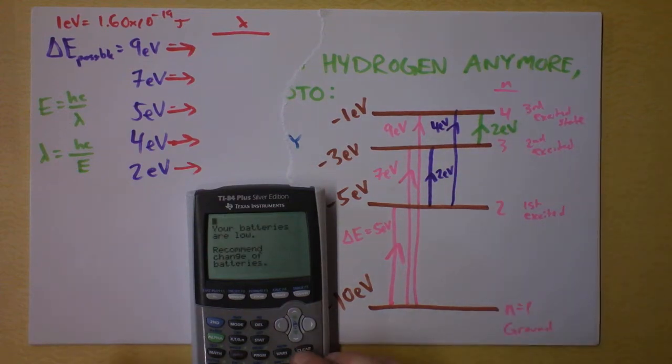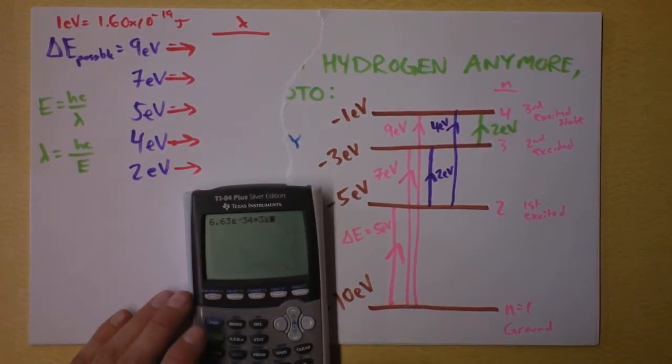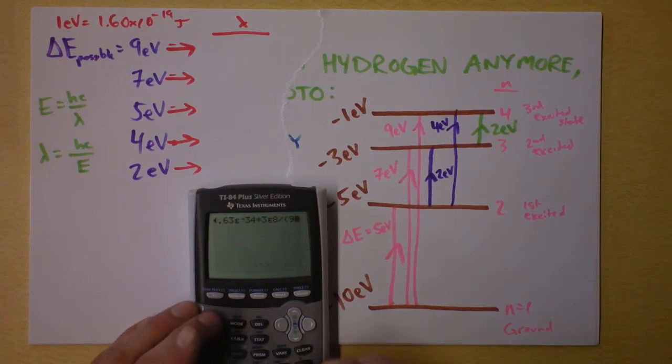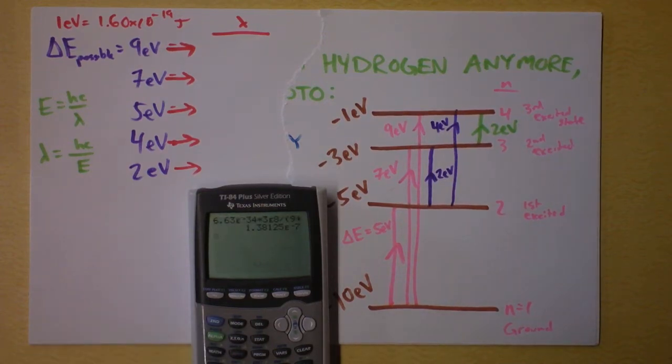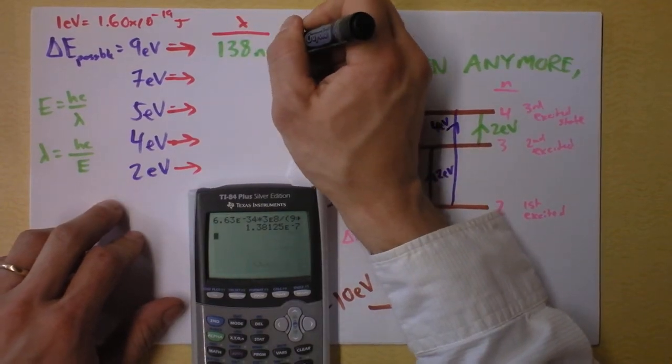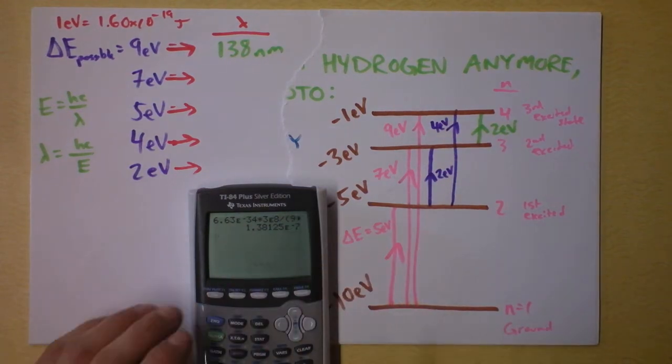I plug in h, 6.63 times 10 to the negative 34. And then I'm going to plug in the speed of light, 3 times 10 to the 8th. And then I'm going to divide by the energy, but remember I need to convert it into joules also. So I take 9 and then I'm going to multiply it by 1.6 times 10 to the negative 19th. That right there is our first wavelength. Then I'm going to put it into nanometers because that's my flavor. I get 138 nanometers.